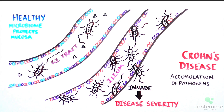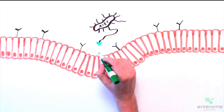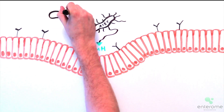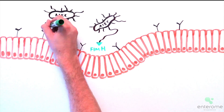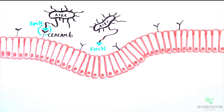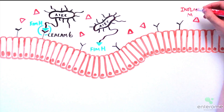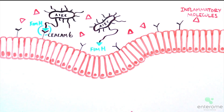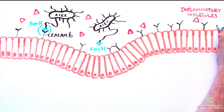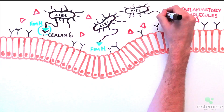Let's discover why. AIEC bind to the CEACAM6 glycoprotein anchored to the intestinal cells through its FimH protein located at the end of type-1 pili. This induces secretion of inflammatory cytokines, which enhance CEACAM6 expression and, consequently, novel AIEC adhesion.